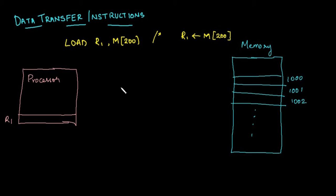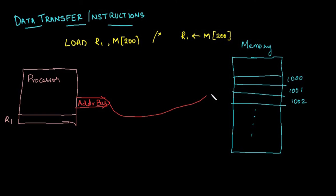There are three types of buses between a processor and main memory. The first is the address bus, which sends out the address of the location where data is to be fetched into register r1. We send address 1000 on the address bus to the memory. Memory decodes this address, goes to location 1000, and let's say the data stored there is F6.